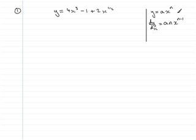And we have a special case here as well, that if we have a constant, as we have here, minus 1, when you differentiate any constant, so if y was equal to a, dy dx always equals 0.